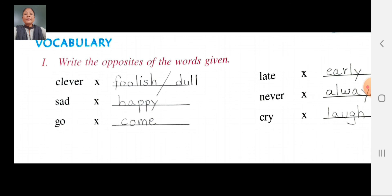One second, let me repeat. Write the opposites of the words given. Clever opposite: foolish or dull. Sad opposite: happy. Go opposite: come. Late opposite: early. Never opposite: always. Cry opposite: laugh.